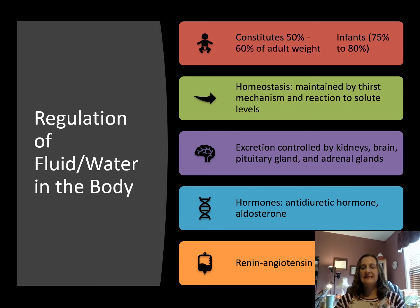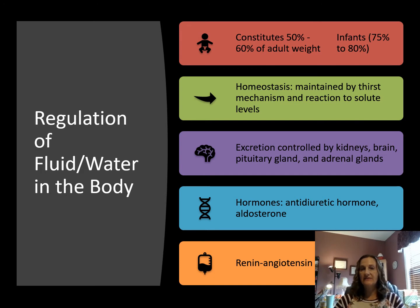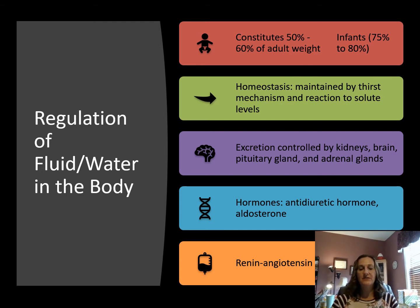How do we regulate and maintain homeostasis in the regulation of fluid in the body? Fluid in adult weight constitutes about 50% to 60%, while it's even higher in infants at 75% to 80%. The hypothalamus in the brain regulates thirst, hunger, and sleep function — it is the thirst, eat, and sleep center.